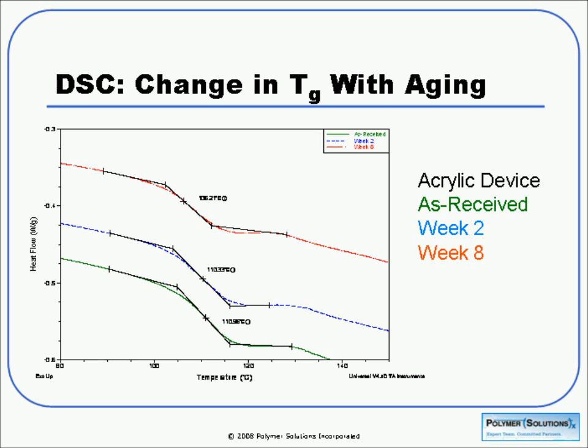In one study at Polymer Solutions, we had an acrylic device that we were taking through an accelerated aging protocol to see how it might react to certain conditions, and one of the ways we tested it was with DSC. The green curve at the bottom is the sample as received, the blue curve is two weeks, and the red curve is eight weeks. We can see a drop in Tg from about 111°C down to 106°C, indicating that the test conditions are actually starting to degrade the sample a little bit. This is an easy way to get a handle on that, and the small sample size means you may still have other parts of the aged material available for additional testing.